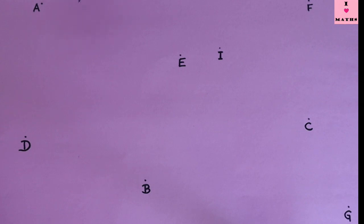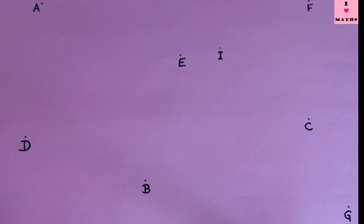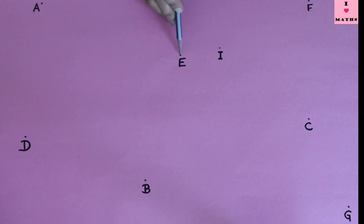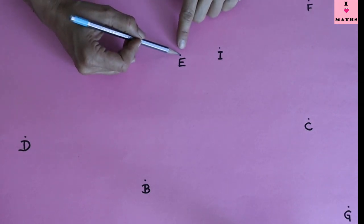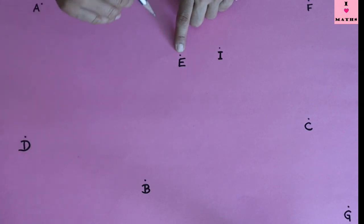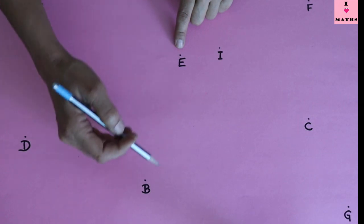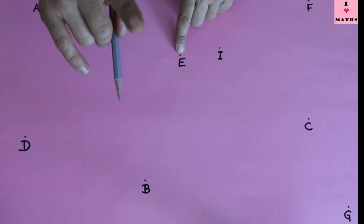After that, you have to find the difference between the accurate distance and the guessed distance. For example, if you guessed the distance between I and E as 7 centimeters but the actual distance is 6 centimeters, the difference is 1 centimeter. Or if you guessed E to B as 12 centimeters but the actual distance is 15 centimeters, you subtract: 15 minus 12 equals 3 centimeters.